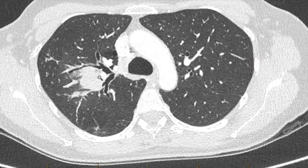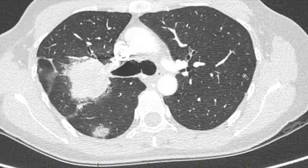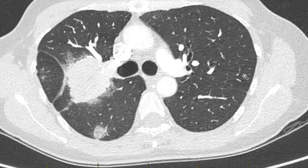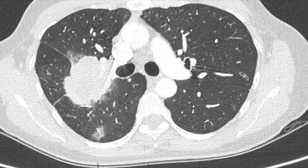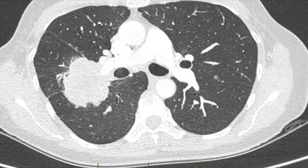There may be an endobronchial abnormality just in there, in the sub-segment of the posterior segment. As we go further down into the middle lobe, you can see this is bronchus intermedius here.